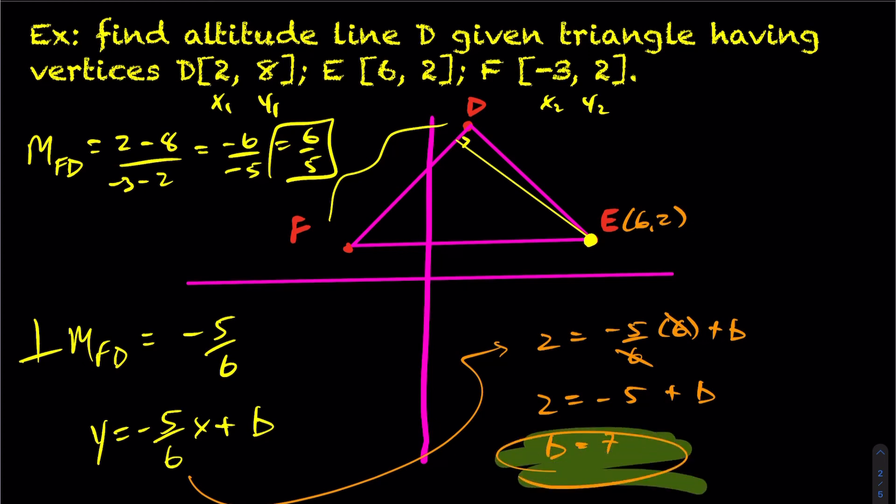So there's our b value. So we can put this together here and get a final answer. The equation of altitude line E is y equals negative 5 over 6x plus 7.